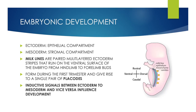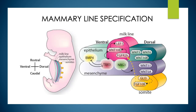Embryonic development. There are two main compartments: the ectoderm gives rise to the epithelial compartment, and the mesoderm gives rise to the stromal compartment. Milk lines are paired, multilayered ectoderm stripes that run on the ventral surface of the embryo from hindlimb to forelimb buds. The milk lines form during the first trimester and give rise to a single pair of placodes. Inductive signals between ectoderm and mesoderm influence development, with mesenchyme containing critical inductive signals that produce, through reciprocal epithelial-mesenchymal interactions, epithelium progressively restricted along the mammary lineage.